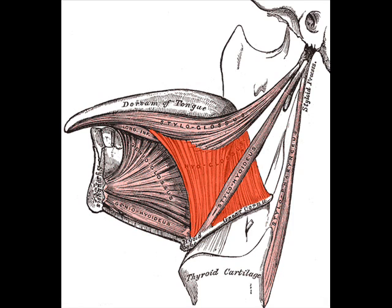The hyoglossus depresses and retracts the tongue and makes the dorsum more convex. The fibers arising from the body of the hyoid bone overlap those from the greater cornu. It is important in singing.